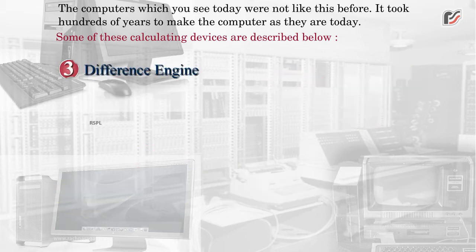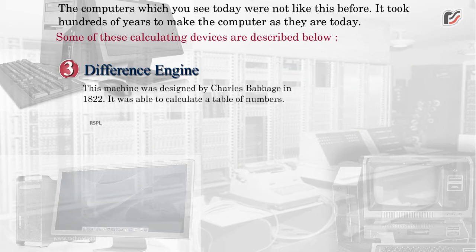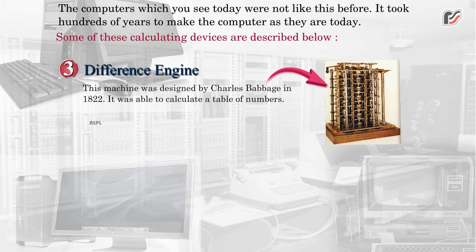3. DIFFERENCE ENGINE. This machine was designed by Charles Babbage. In 1822, it was able to calculate a table of numbers.